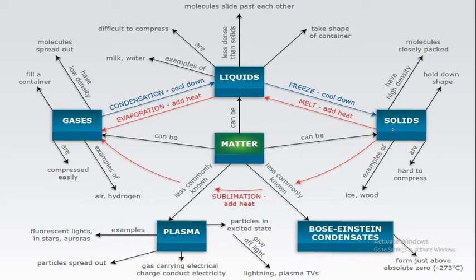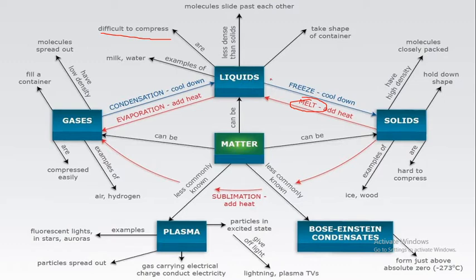If we look at solids, they are rigid, they have fixed shape and fixed volume, they are least compressible, their molecules have a high force of attraction, and molecular distances are very small. When you heat these solids, they convert into liquid — that process is called melting. Liquids have fixed volume but no fixed shape. They are difficult to compress, only slightly more compressible than solids. Molecular attractions are somewhat less than in solids and molecular distances are greater than in solids.